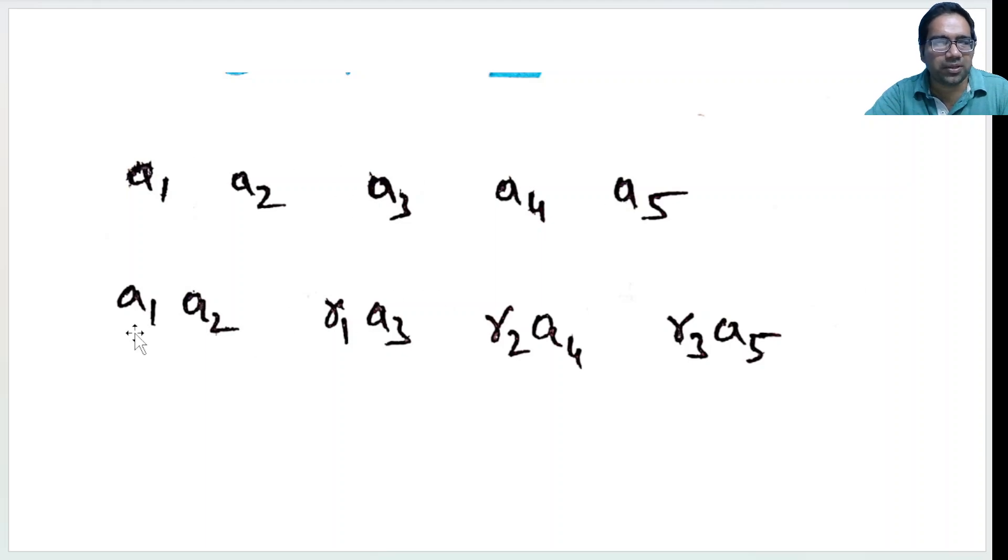So when there are 5 elements, how many iterations did we need? We wanted to eliminate 1 at a time, and we had to do 4 iterations. a1, a2, then result of this and a3, then result of this and a4, then result of this and a5, right?